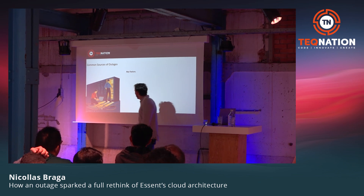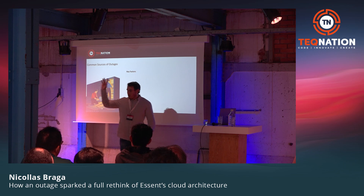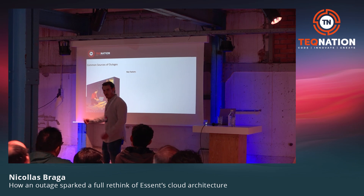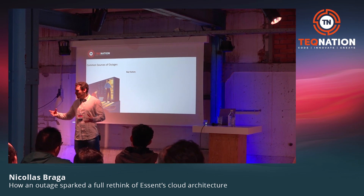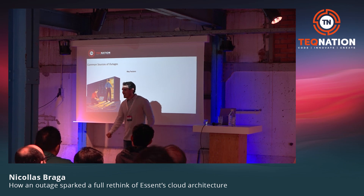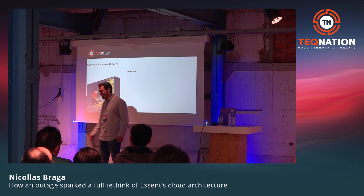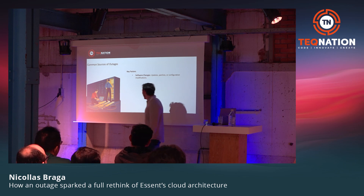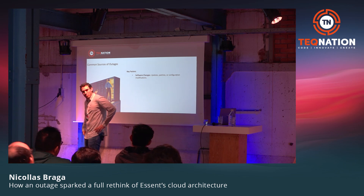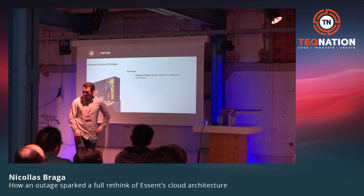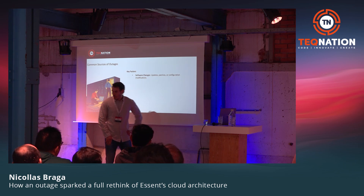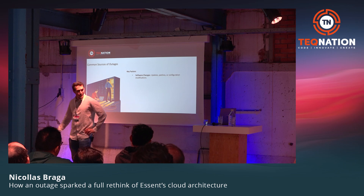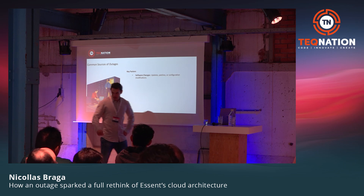Before we start, just some questions: what are some cool sources of outages? What breaks the software? What makes an outage? Humans — that's true. Software changes — you can break software if you do a software change. You test it, you're very confident it will work, you go through your pipeline, and then you put it on production, it breaks. That's one way of making an outage — a very cool one, because you can always roll back.